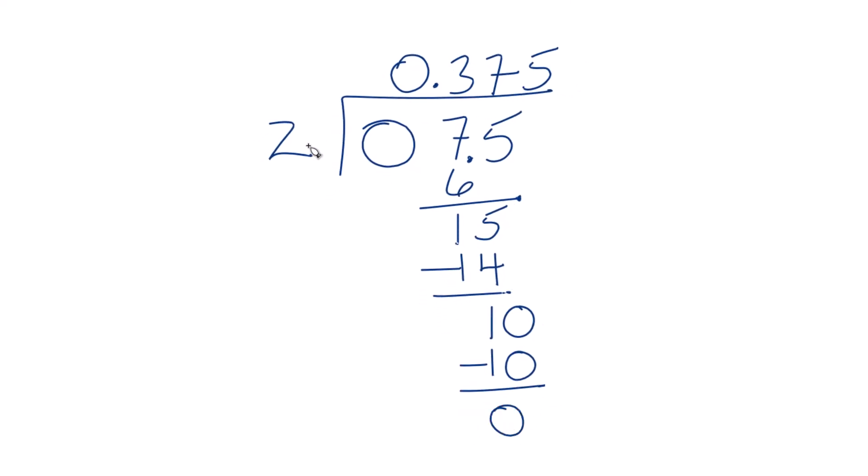So in answer to our question, 0.75 divided by 2 is 0.375. And you can check your work. 2 times 0.375, that'll equal 0.75. So we know we did it correctly.